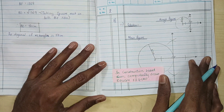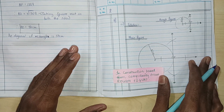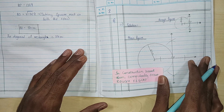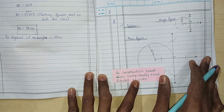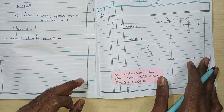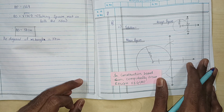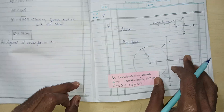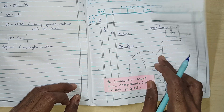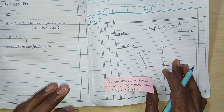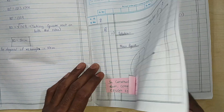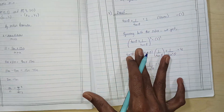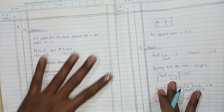We have got the construction topic coming up for 10 marks tomorrow. While talking about construction, in construction-based sums you must compulsorily draw a rough figure. Without a rough figure you cannot move on further. You have to make the rough figure — even if you have a fair figure, still make the rough figure. Because the rough figure also signifies one whole mark.